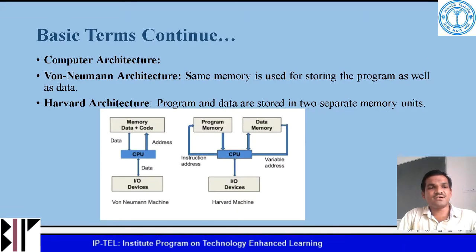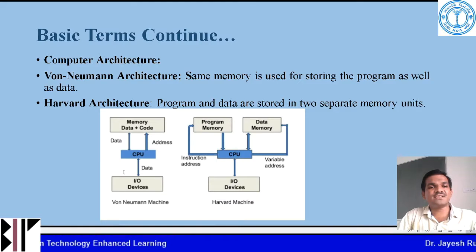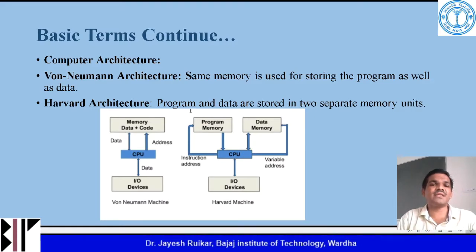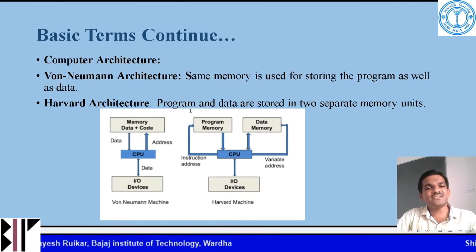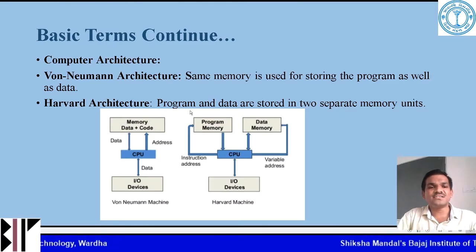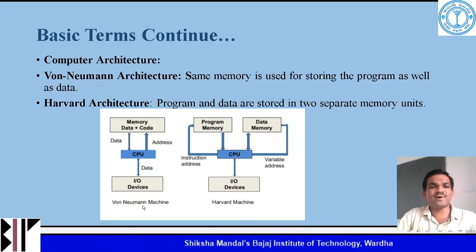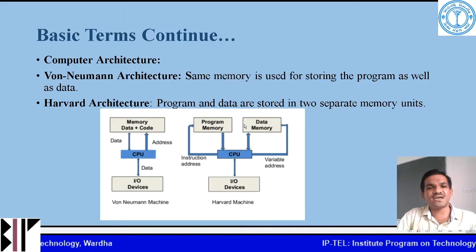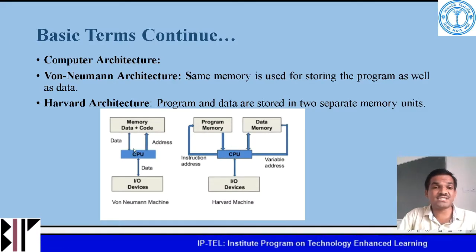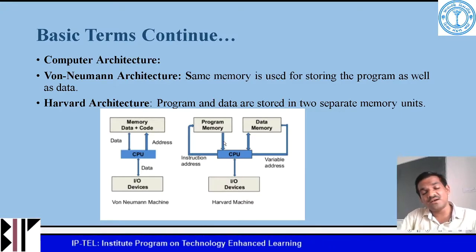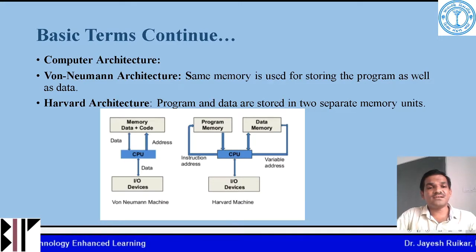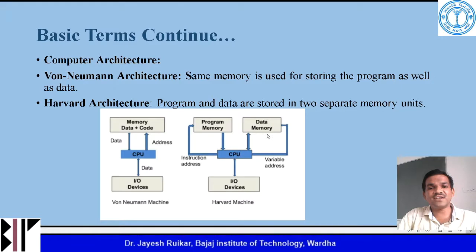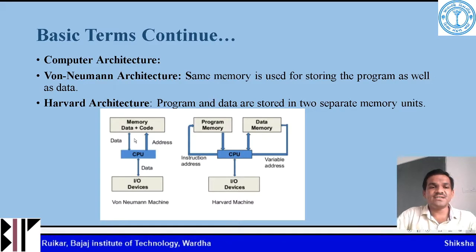Now we will talk about computer architecture. There are two basic types: von Neumann architecture, which uses the same memory for storing both the program and data, and Harvard architecture, where programs and data are stored separately in two different memories. In von Neumann architecture, only one memory cycle is required to fetch instructions, whereas in Harvard architecture, two clock cycles are required. However, Harvard architecture can simultaneously fetch an instruction and access data, which is not possible in von Neumann architecture.